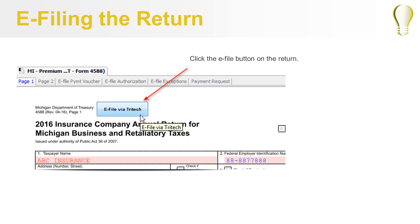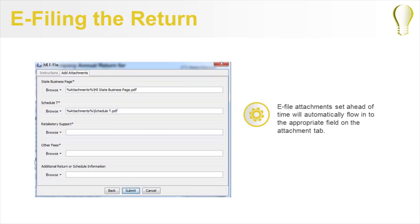When you are ready to eFile, click the eFile button on the return. When you get to the Attachment tab, each attachment type for this state will be listed. If you previously set an attachment as an eFile attachment, it will automatically flow into the appropriate field in this dialog.